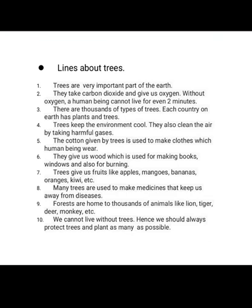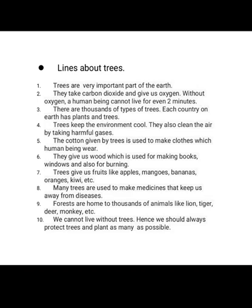Number 3: There are thousands of types of trees. आपको पता होगा कि अगर आप रास्ते पे भी जा रहे हो, तो कोई भी trees सेम नहीं होते — बहुत सारे types के trees होते हैं। Each country on earth has plants and trees — मतलब अर्थ पे जो सारी countries हैं, उन सब में plants और trees होते हैं।